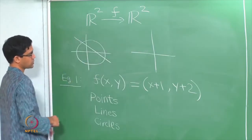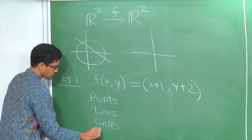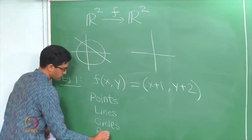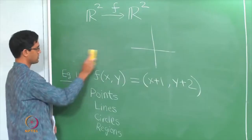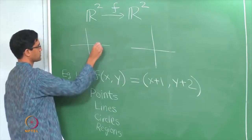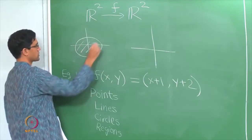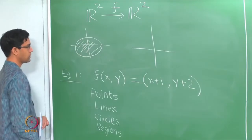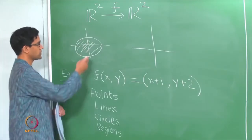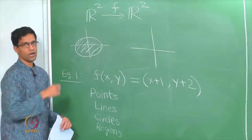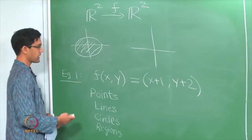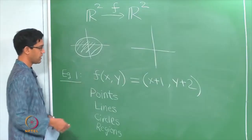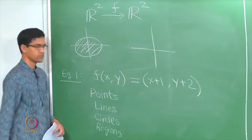The plane itself is two-dimensional, and we could also look at regions in the plane. By a region we mean a two-dimensional thing — for example, you could take the region inside a circle. This disc is what you call a region in R². Of course, a region need not have such a nice shape; it could be a more arbitrary shaped region. These are various subsets of R², and one way of understanding a function f is to see what it does to each of these kinds of things.